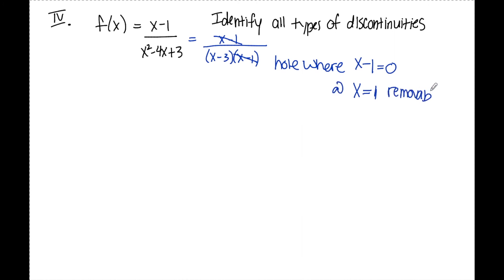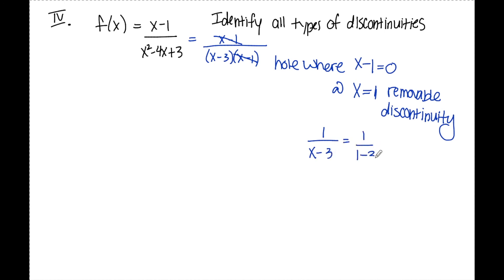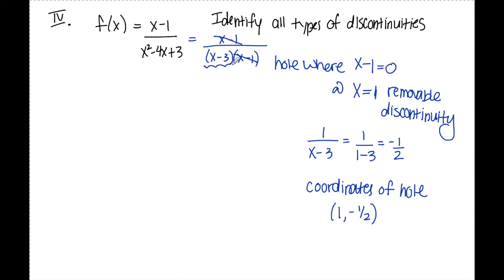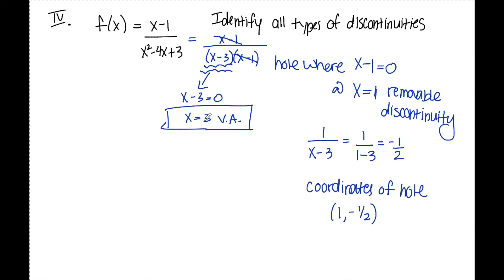At x equals 1 there is a removable discontinuity. To find the coordinates of the hole, plug x=1 into what's left after canceling: 1/(x-3). That gives 1/(1-3) = negative one-half, so the hole is at (1, -1/2). The remaining factor x-3 did not cancel; setting it equal to zero gives x equals 3, which is a vertical asymptote. So this function has a hole at (1, -1/2) and a vertical asymptote at x equals 3.